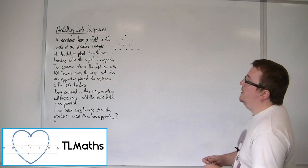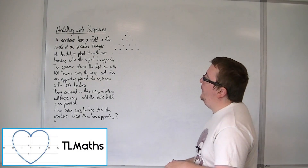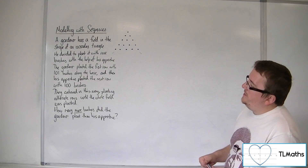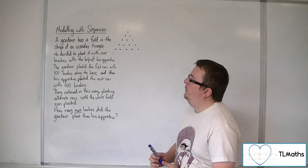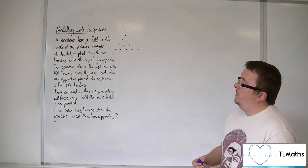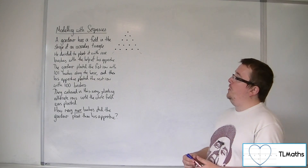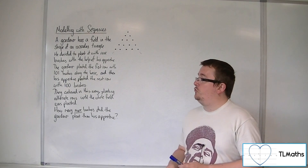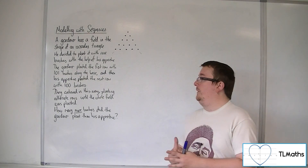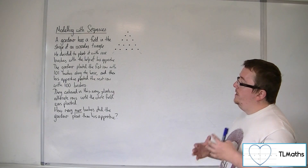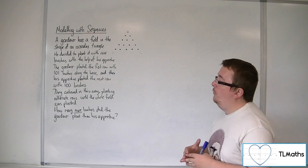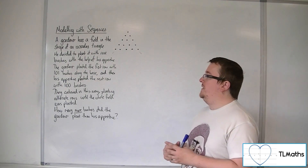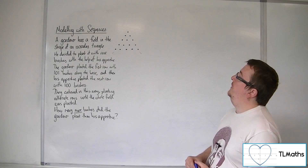Here is a problem. A gardener has a field in the shape of an isosceles triangle. He decided to plant it with rose bushes with the help of his apprentice. The gardener planted the first row with 101 bushes along the base, and then his apprentice planted the next row with 100 bushes. They continued in this way, planting alternate rows until the whole field was planted. How many more bushes did the gardener plant than his apprentice?